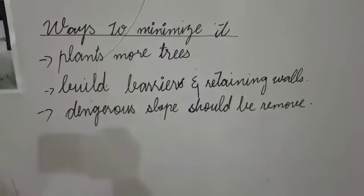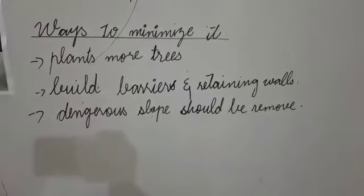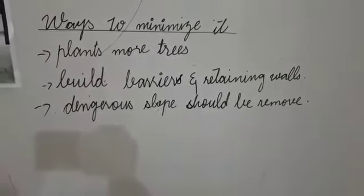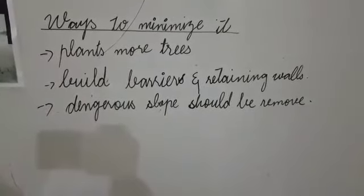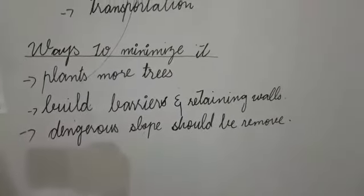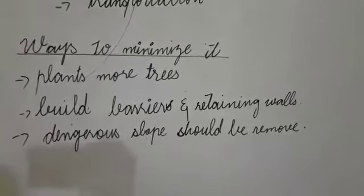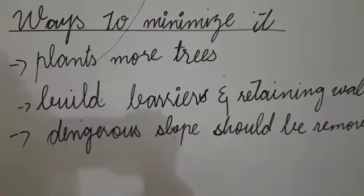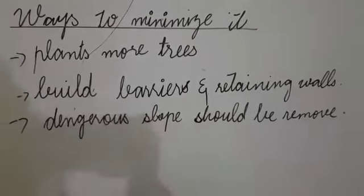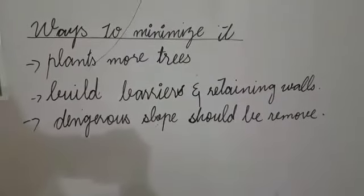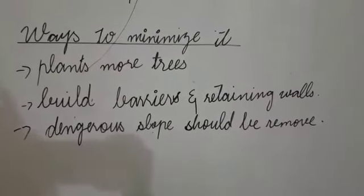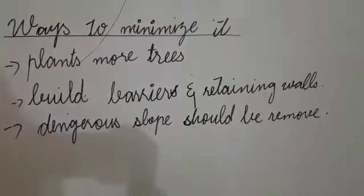Steep and dangerous slopes should be removed. Settlements can be increased in those areas. Plant more trees, build barriers and retaining walls in the sloping areas and dangerous slopes should be removed from those areas.